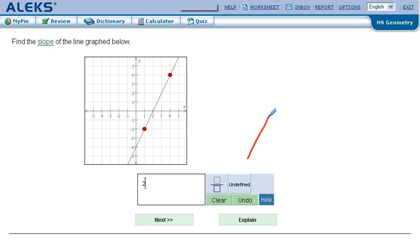You also see here, you're given the option of undefined. Just as a recap, if a line is completely horizontal, rise over run. In this case, it has run, but it has no rise. So that's 0 over a number. 0 over anything is just 0.